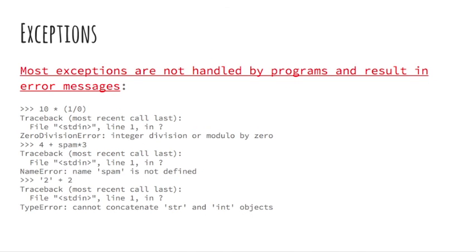The last line of the error message indicates what happened. Exceptions come in different types, and the type is printed as part of the message. The types in the example are ZeroDivisionError, NameError and TypeError. The string printed as the exception type is the name of the built-in exception that occurred.